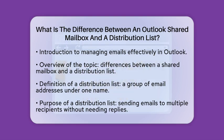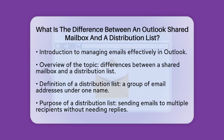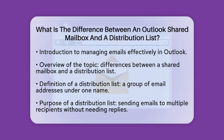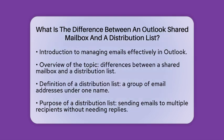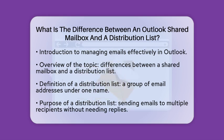First, let's talk about the distribution list. A distribution list is a simple way to send emails to multiple people at once. Think of it as a group of email addresses bundled together under one name. When you send an email to this group, it automatically goes to everyone on the list. This is perfect for sending out company announcements or newsletters where you don't need any replies. However, keep in mind that recipients do not have access to each other's responses.